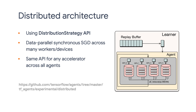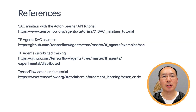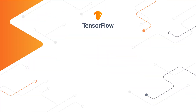So to summarize today, we discussed the continuous and discrete control. Then we walked you through a SAC example using the Actor Learner API. We also touched upon distributed training so that you can run your training much faster. In our next episode, we're going to talk about bandits. See you next time.